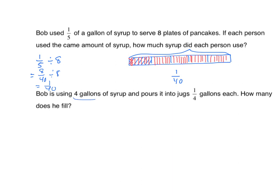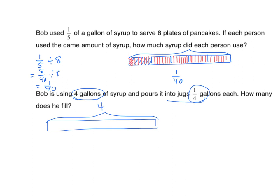One more problem: Bob is using four gallons of syrup and pours it into jugs that are one-quarter gallon each. How many does he fill? The whole this time is my four gallons. I'll partition the tape diagram into four equal parts — each represents a gallon — then break each into fourths. We have four fours, which is sixteen. Using the algorithm: four divided by one-fourth equals four times four equals sixteen. That's a quick run through many problems very similar to what you'll see on your actual assessment. Thank you.